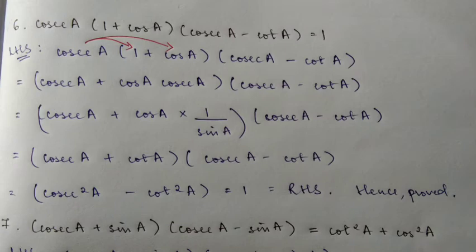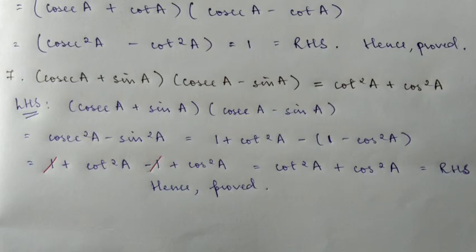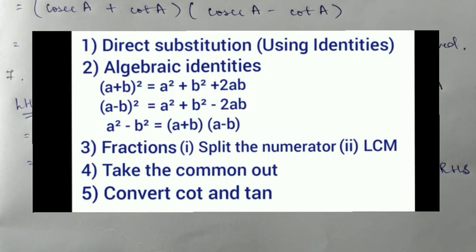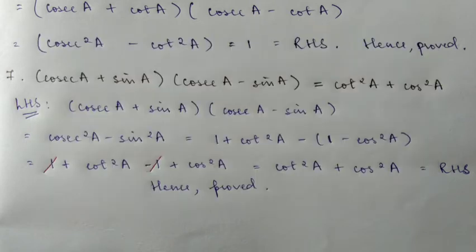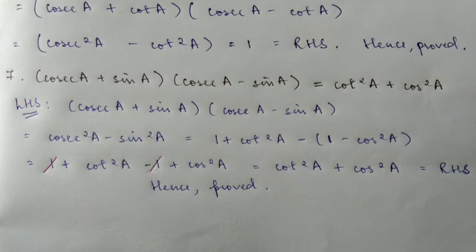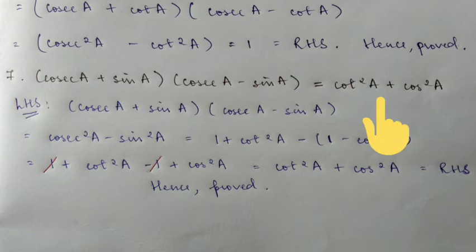Now moving on to question number seven: cos(e) + sin(e) times cos(e) minus sin(e). On the left-hand side, we apply direct substitution using the formula. So using direct substitution, we then use algebraic identities — specifically the identity (a+b)(a-b) = a² - b².